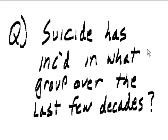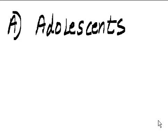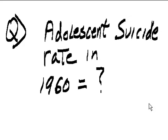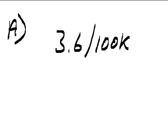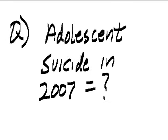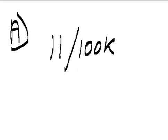Question: Suicide has increased in what group over the last few decades? Answer: Adolescents. Question: Adolescent suicide rate in 1960 equals what? Answer: 3.6 per 100,000. Question: Adolescent suicide in 2007 equals what? Answer: 11 per 100,000.